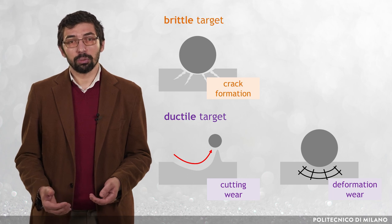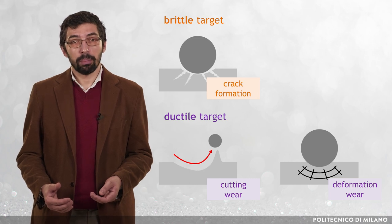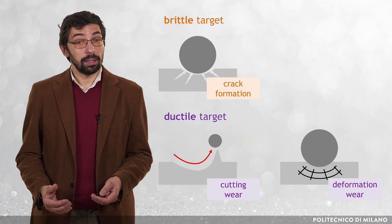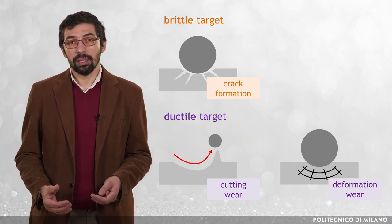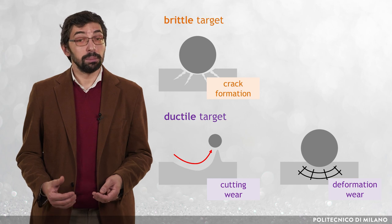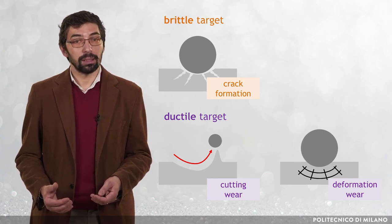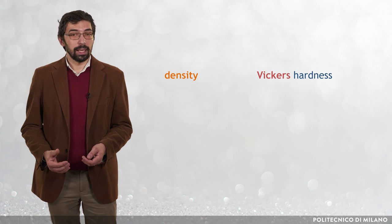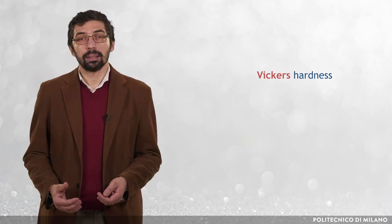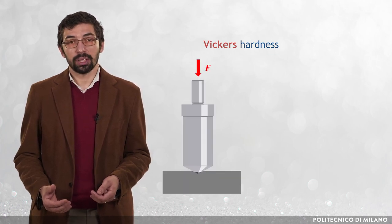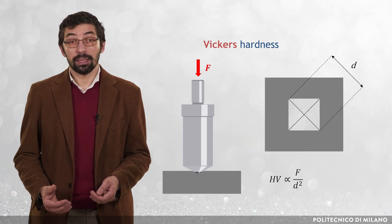Cutting wear mainly occurs when particles hit the surface at low impact angle, creating craters with piled-up material on their rims, which is finally washed out. Deformation wear mainly occurs at high impact angles, when repeated impacts produce plastic deformation and local work hardening. In addition to brittle and ductile behaviours, two parameters are widely used in erosion modelling and testing to characterise the target material: density and Vickers hardness. The latter, usually expressed in gigapascals, is obtained from the size of an impression produced under load by a pyramidal-shaped diamond indenter.